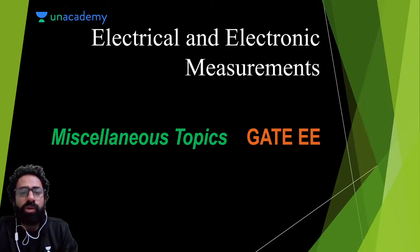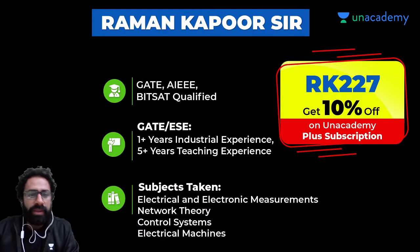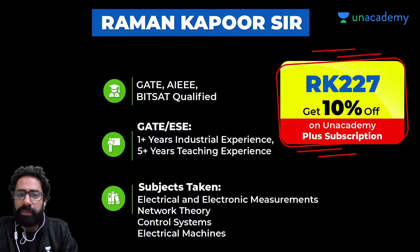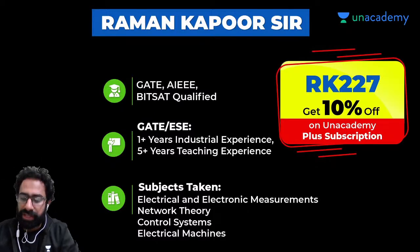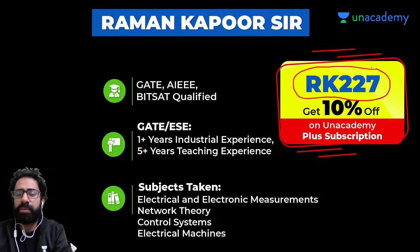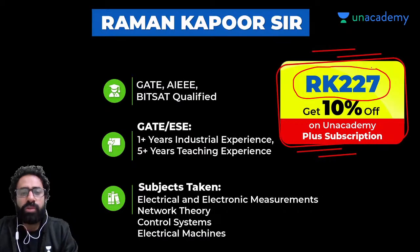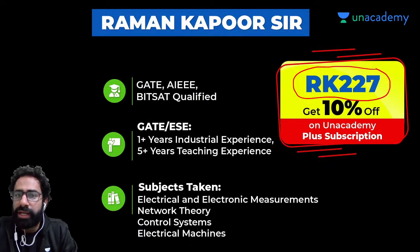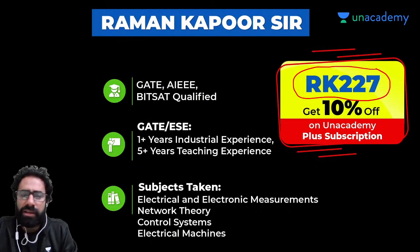The first topic is the Cathode Ray Oscilloscope, that is CRO. Before moving on — my name is Raman Kapoor, I am B.Tech Electrical from NIT Durgapur and M.Tech from IIT Roorkee. My coupon code RK227 gives you 10% off on Unacademy Plus subscription. Currently running courses include Electrical and Electronic Measurements crash course on YouTube at 8–9 AM, which is almost at completion stage with around 8–9 classes remaining.